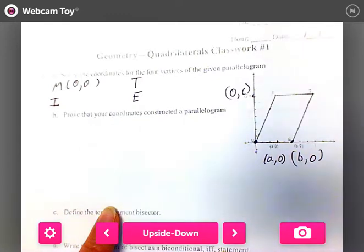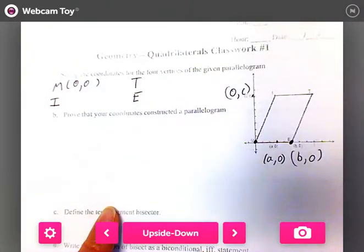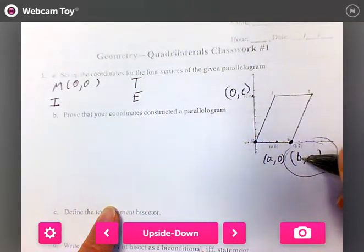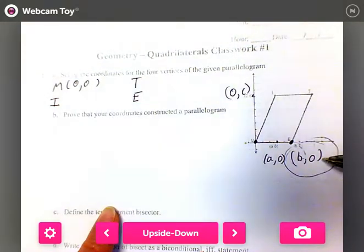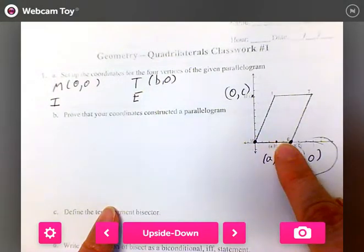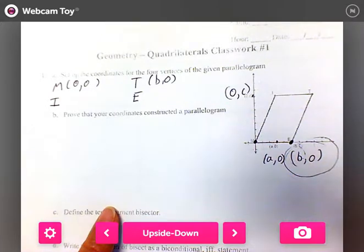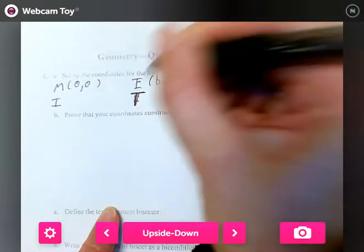The next one I think is easy as well. What is the coordinates for E? What does this say right here? B, 0. So that's what it is. It's just B, 0. I don't know if this coordinate plane is counting by 1s, 2s, 5s, so I just have to say what it is. I wrote it for T. I'm going to change it to E.